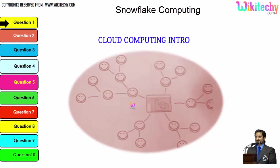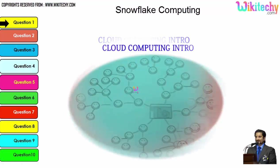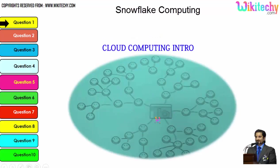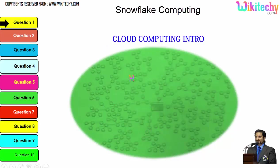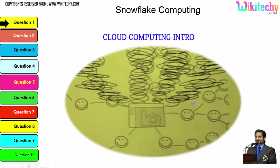Let's talk about the cloud computing intro. Here is a computer which is connected to a server, and this server is monitoring this computer. Once the network becomes bigger, the monitoring becomes tougher for that particular server. As more computers are added, the network gets really bigger and the monitoring system becomes really slow. There is also a possibility that the network crashes or the server couldn't monitor specific networks.